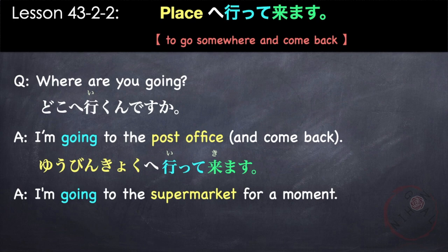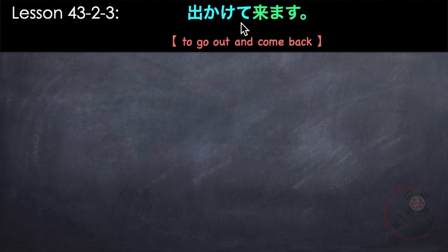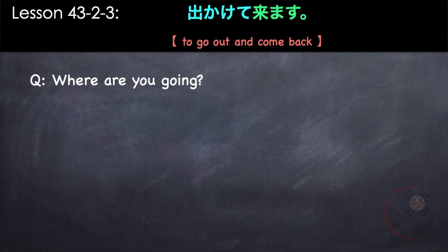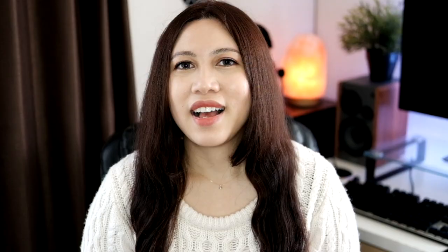Another example: 'I'm going to the supermarket for a moment.' And last is dekakete kimasu. Dekakimasu means to go out. We use the te-form of dekakimasu, so it becomes dekakete followed by kimasu. This is used when you don't want to say where you are going or what you're going to do — you're just going out and then coming back. For example: 'Where are you going?' — Doko e ikundesuka? — 'I'm going out and coming back soon' — Chotto dekakete kimasu.